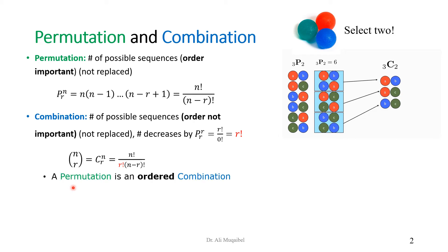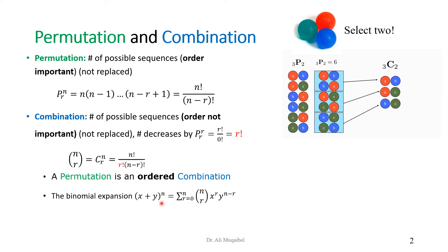A permutation is an ordered combination — permutations are combinations where we care about the order. Also remember that combinations are used in binomial expansion. If you have (x + y) raised to power n and you want to find the coefficients, you need the choose operator, the combination operator. As the power grows to five or six, you are better off using the formula.